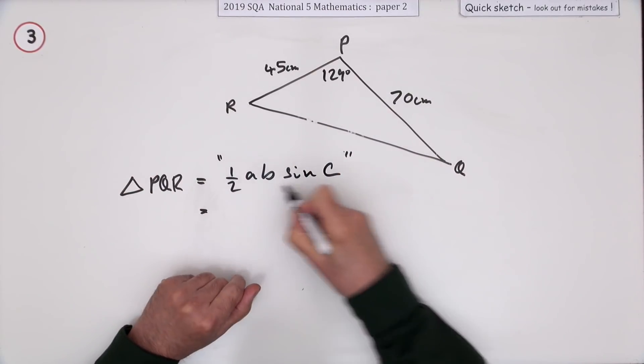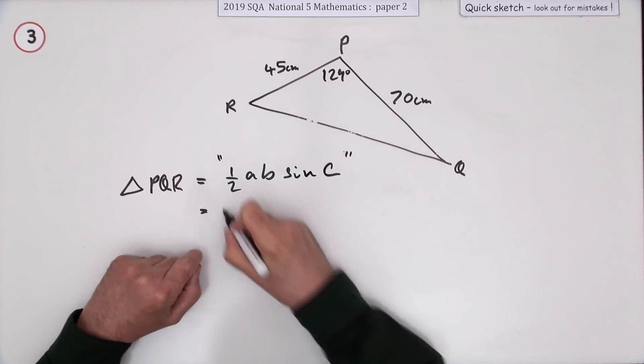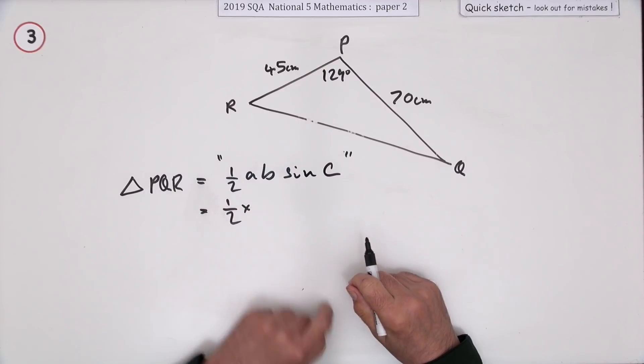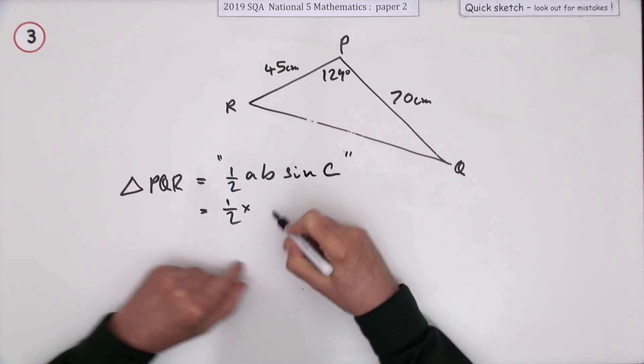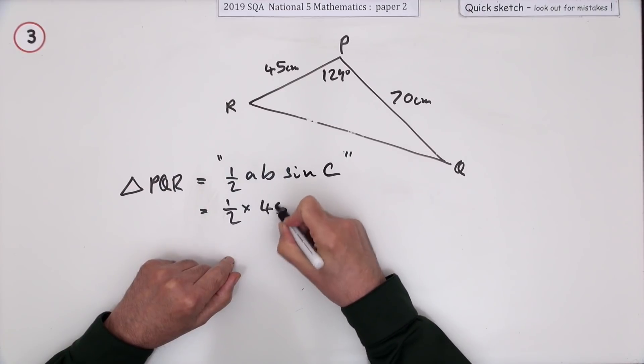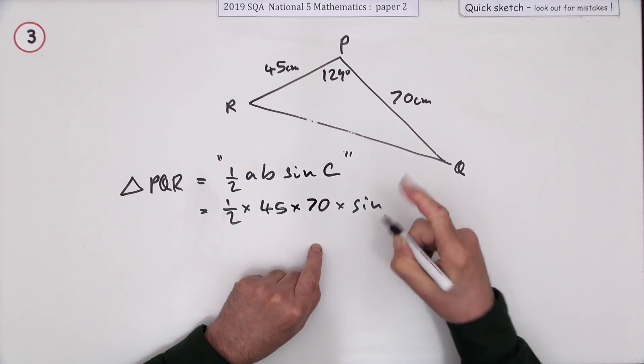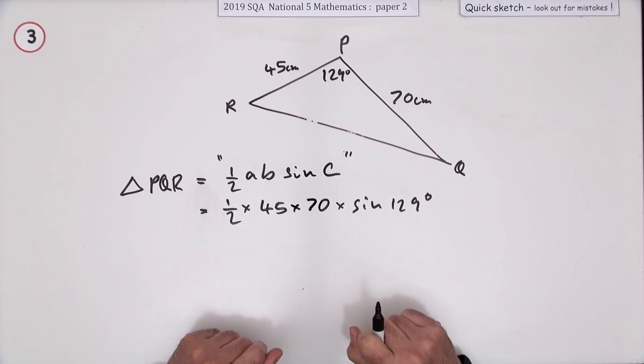But essentially you just need to know the configuration of the sides. What it means is it's a half of the lengths of the two adjacent sides times the sine of the angle between them. So you just pop that in your calculator then.